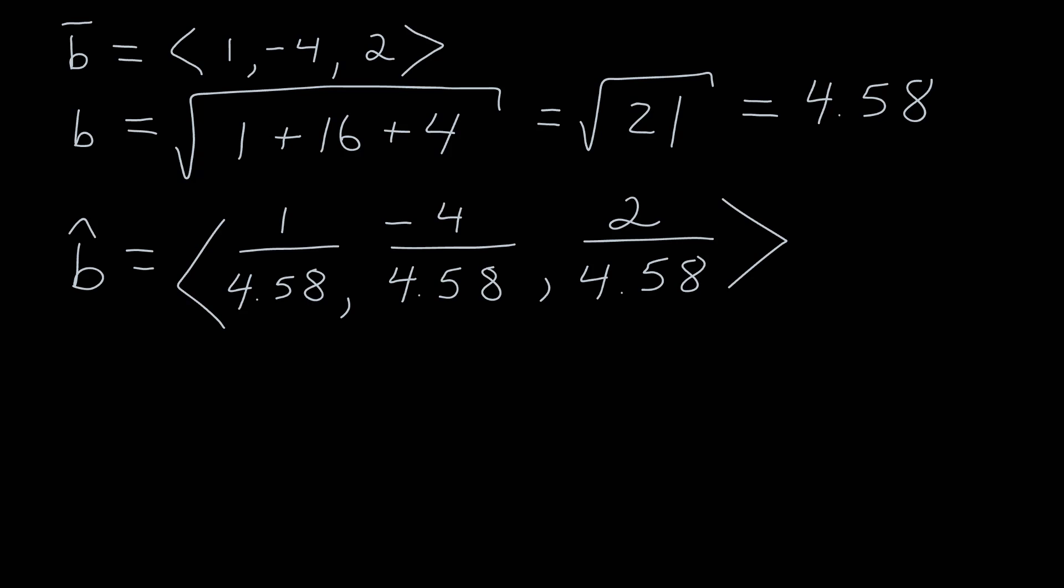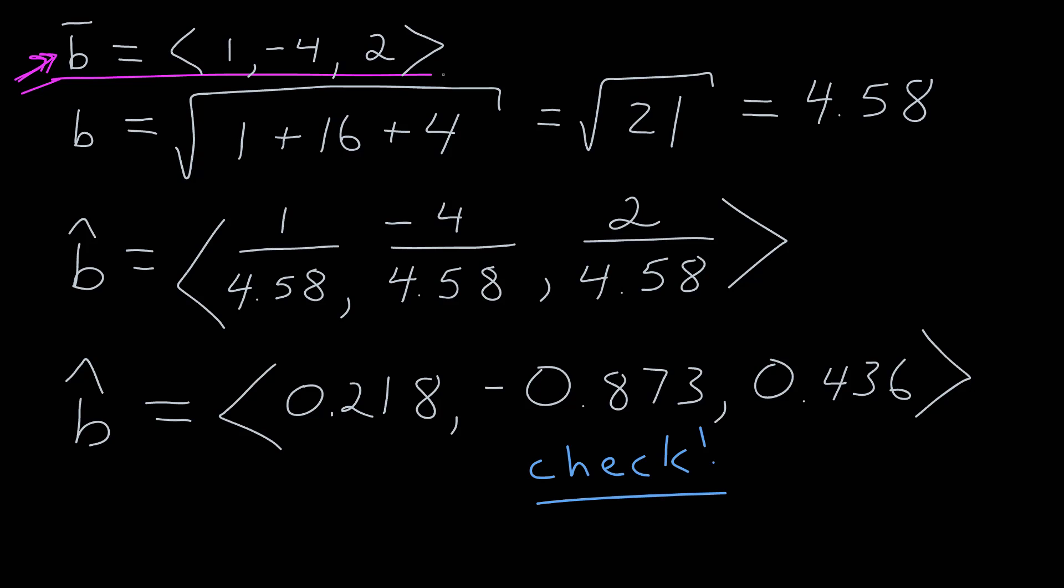The unit vector then is each component divided by the magnitude, 1 over 4.58, negative 4 over the magnitude, and then 2 divided by the magnitude. My calculator tells me that those values are 0.218, negative 0.873, and 0.436. That's now the unit vector for the original vector b, a vector of magnitude 1 pointing in the same direction as that vector. And of course, you would know how to check something like that, which is to calculate the magnitude with those numbers to make sure you get the number 1.